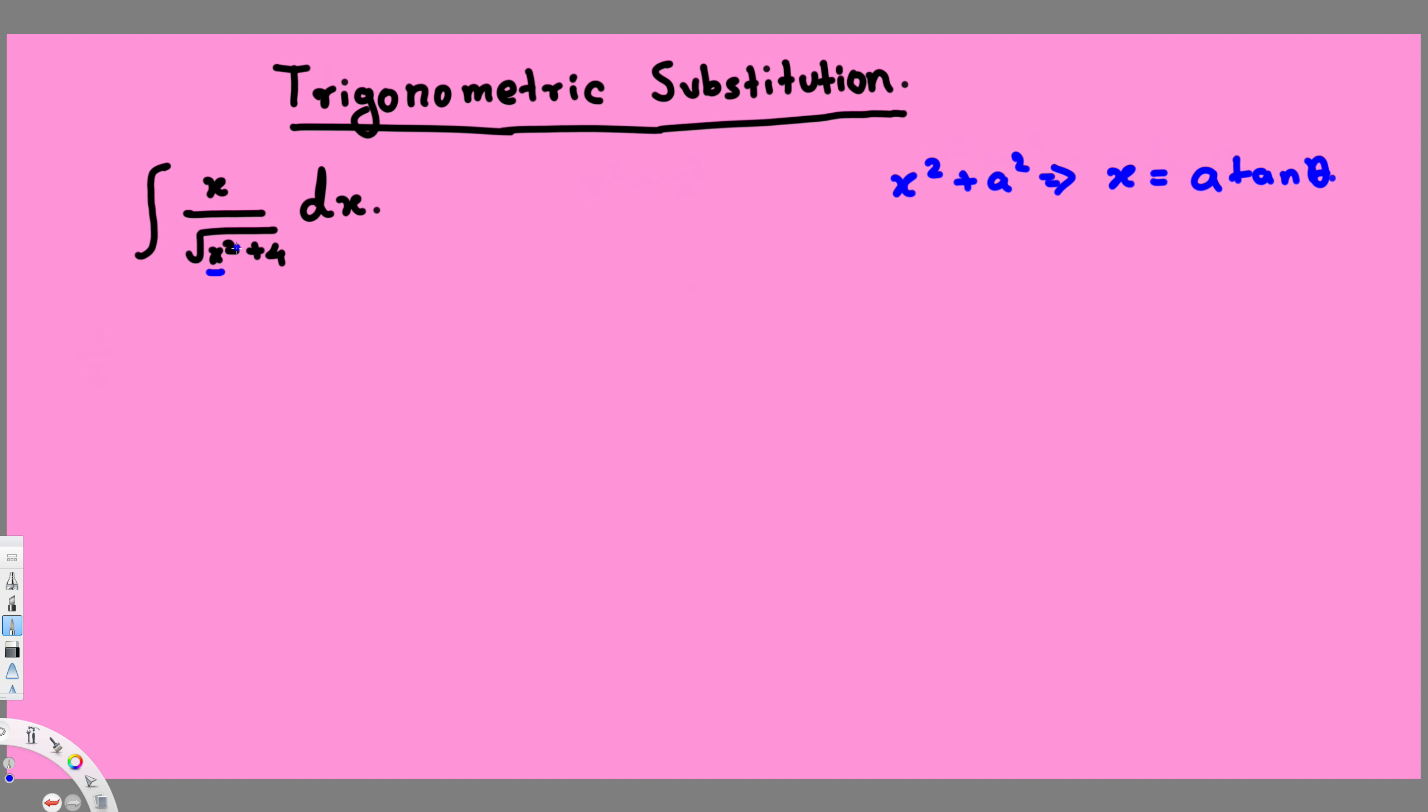Let's do the u substitution here. We're going to have u is equal to x squared plus 4. And if you take the derivative of this one, this is going to be just 2x dx.